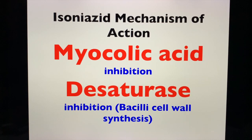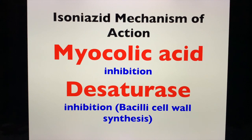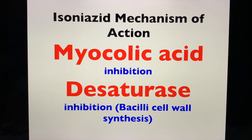Let's start with isoniazid first. The mechanism of action of isoniazid, as stated in most references, is the inhibition of mycolic acid — a very important component of the bacterial cell wall of Mycobacterium. Isoniazid also has a secondary mechanism: it inhibits the enzyme desaturase, which is involved in the cell wall synthesis of your mycobacterial bacilli.